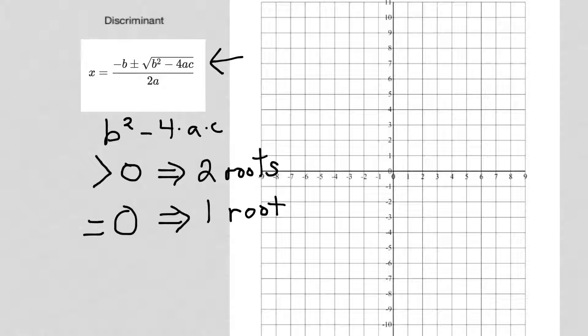One root means that it's a parabola that reaches down and touches the x-axis one time, right there. On this one, it touches at three zero. So when you do b squared minus 4ac, and it equals zero, you've got one root.